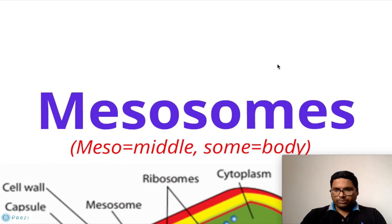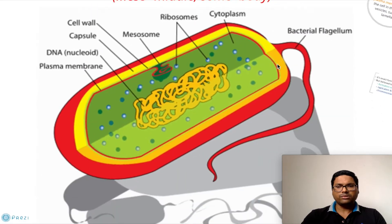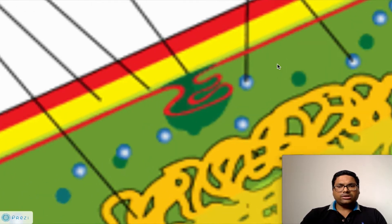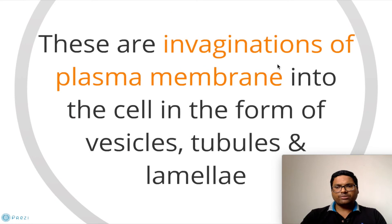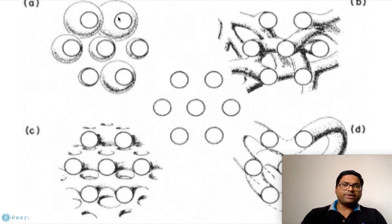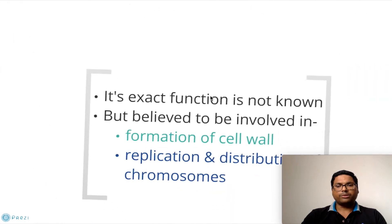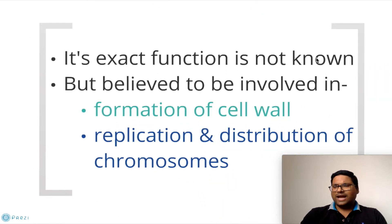Mesosomes are special structures present inside the cytoplasm. They are actually invaginations of the plasma membrane into the cell in the form of vesicles, tubules, and lamellae. You can see the vesicle structures, the tubule structures, and how these come together to form the lamellae of the mesosomes.